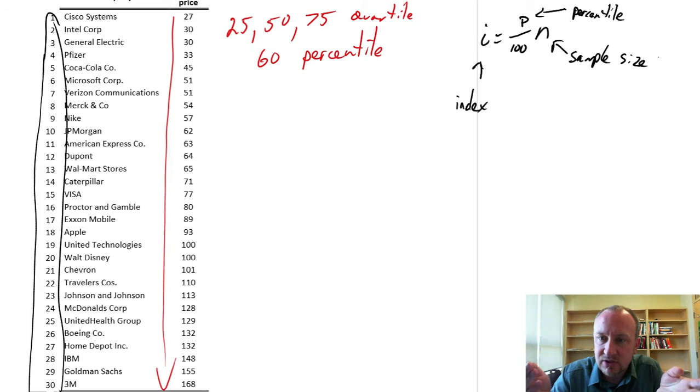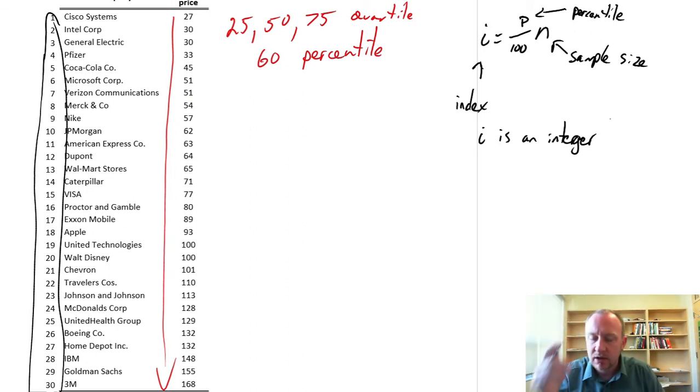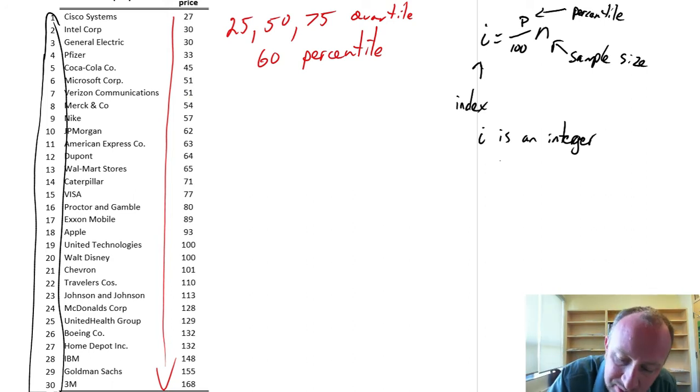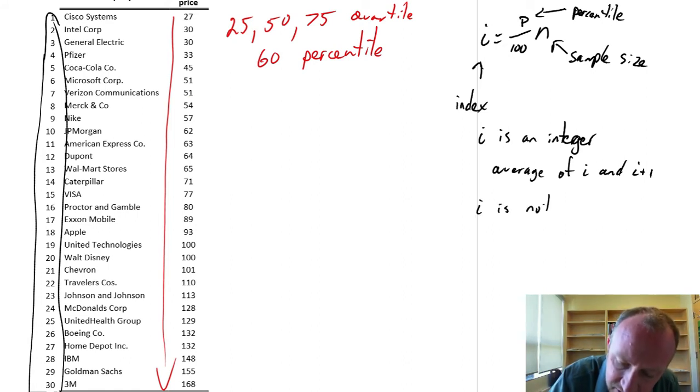Now, there's a little bit of a trick. If I is an integer, so it's a whole number, then the relevant value of interest for the percentile or quartile will be the average of i, the ith observation, and the i plus one observation. And I'll show you that because I think that'll happen in our data set here. If i is not an integer, so it's a decimal value, then we'll round up in order to find our relevant value. And again, I'll show you that as we go through the exercise.